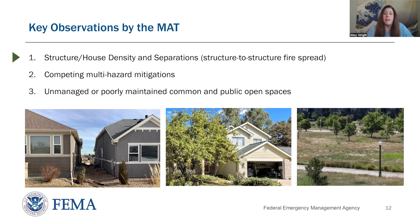First, the MAT noted that housing density and separations had an impact on structure-to-structure fire spread. For typical parcel sizes and residential structure separations, like 5 to 10 feet, the effects of radiation, direct flaming, and ember exposures from a home on fire are likely sufficient to ignite an adjacent structure, particularly under high wind conditions.